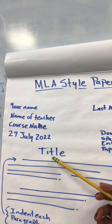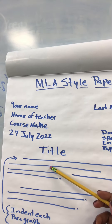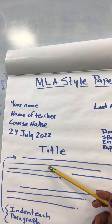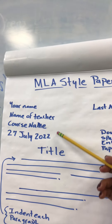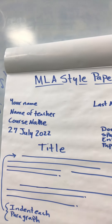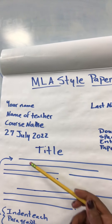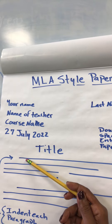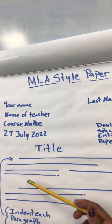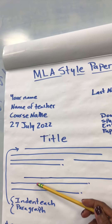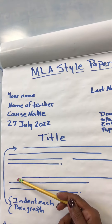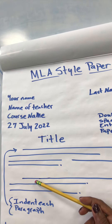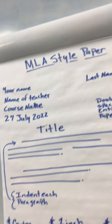Once again you have the title — it's centered — then you double space down to your first paragraph. The entire paper is double spaced. Each paragraph is indented. Then you have your next paragraph, and once again it too is indented.